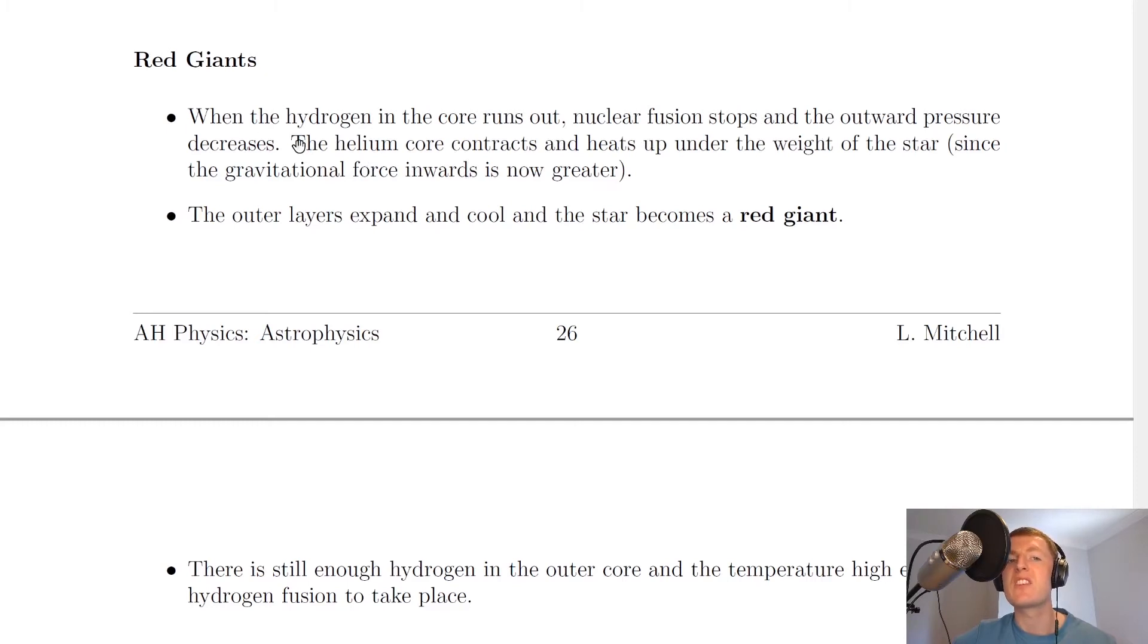Next we have the red giants. When the hydrogen in the core runs out, nuclear fusion stops and the outward thermal pressure decreases. The helium core contracts and heats up under the weight of the star, since the gravitational force inwards is now greater. The outer layers expand and cool and the star becomes a red giant.